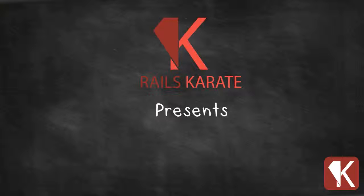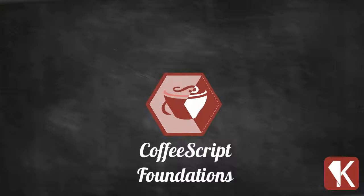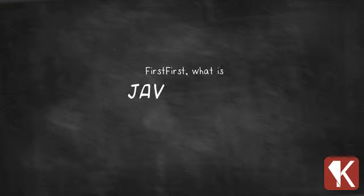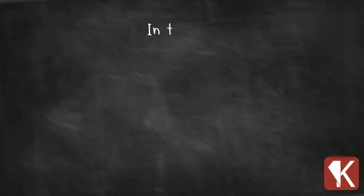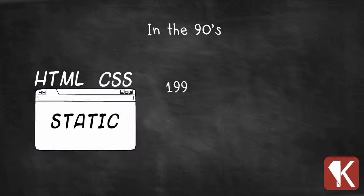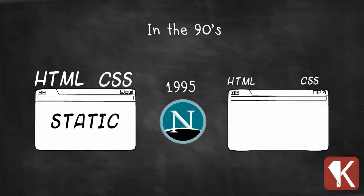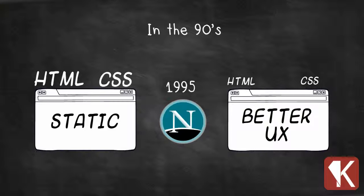Welcome to this introductory video of the CoffeeScript Foundation's course of Rails Karate. Let's start talking about JavaScript. In the 90s, a web browser could only read static HTML and CSS to display a website properly. In 1995, some people at Netscape wondered: what if we can send a computer program to the browser and create an even better user experience? That's how JavaScript was born.